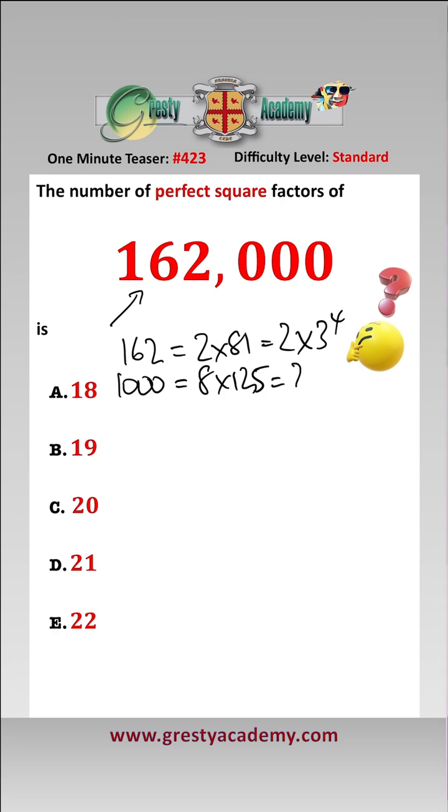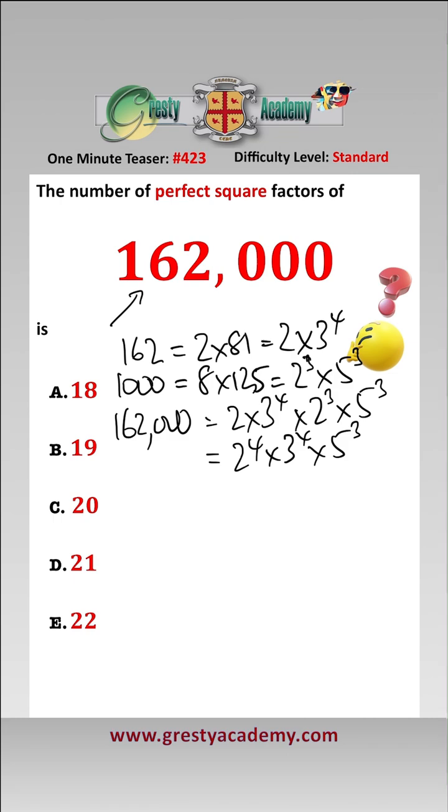which equals 2 cubed times 5 cubed. So therefore 162,000 is equal to 2 times 3 to the 4 times 2 cubed times 5 cubed, which equals 2 to the 4 times 3 to the 4 times 5 cubed.